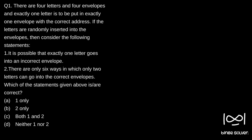Which of the statements given above is or are correct? Four options are given. We have four envelopes and four letters. It is said that the letters are randomly inserted into the envelopes. The first statement is: it is possible that exactly one letter goes into an incorrect envelope.